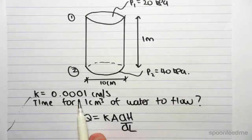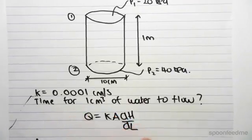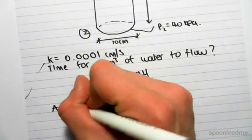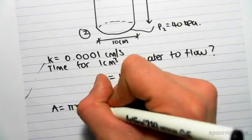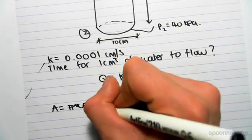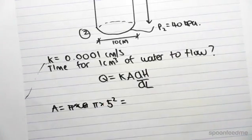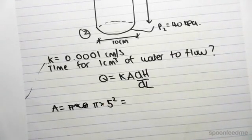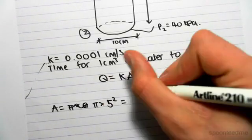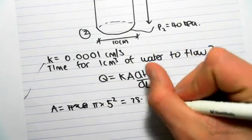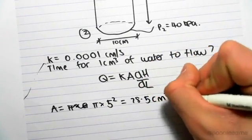So we know k, it's been given. We know A, we can find A easily, it's just the area. So it's pi r squared, is pi times 5 squared. So pi times 5 squared, we get 78.5 centimeters squared.